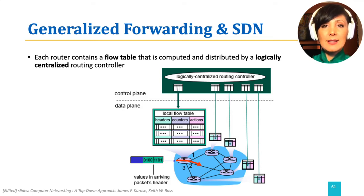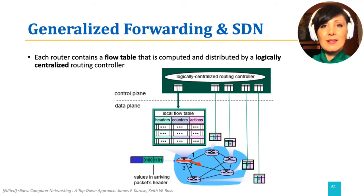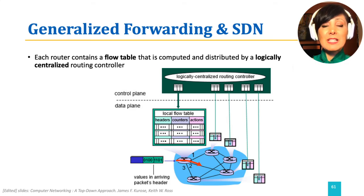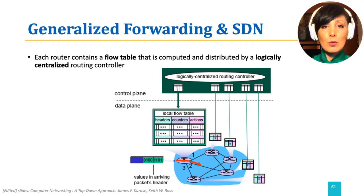Generalized forwarding generalizes both the matching and the action. It generalizes matching to be able to match more than just a range of bits in the destination address, and generalizes the action to be more than just forwarding to a specific port number. In software-defined networking, instead of a table of prefixes used in traditional destination-based forwarding, we have a flow table that is computed and distributed by a logically centralized routing controller. This table includes the matching rules and the associated actions.